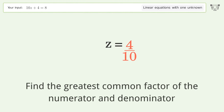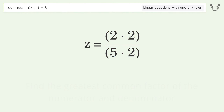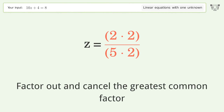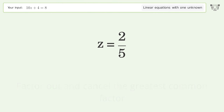Find the greatest common factor of the numerator and denominator. Factor out and cancel the greatest common factor. And so the final result is z equals 2 over 5.